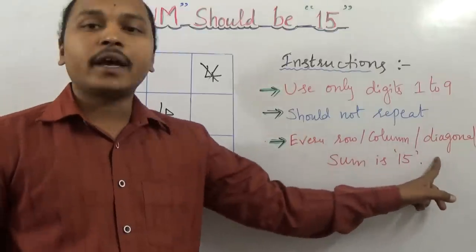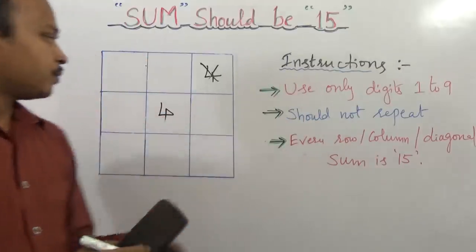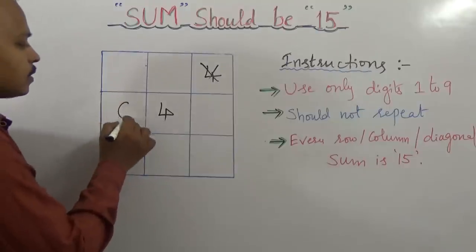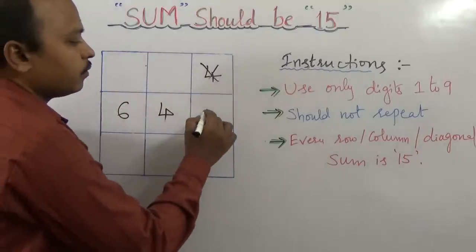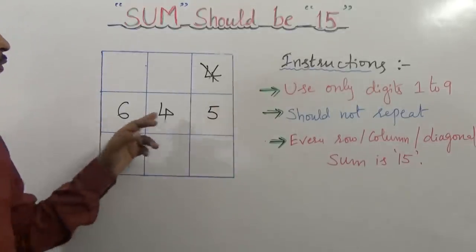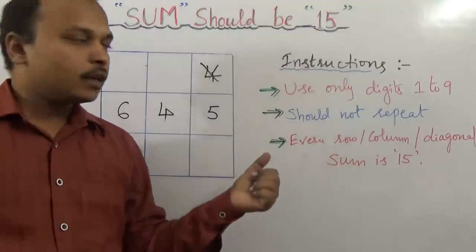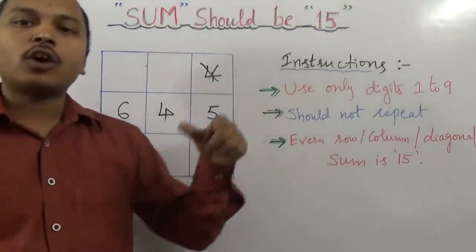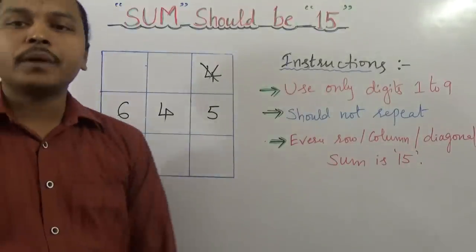Every row, column, and diagonal sum should be 15. For example, 4 and 5, or 6. Six plus four is ten, and we need 15, so 5. Six plus four plus five is 15. This row is 15. In the same way, every row and every column, even the diagonal, should be 15, and numbers should not repeat.